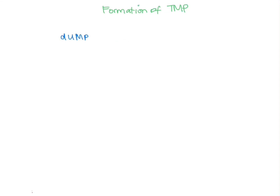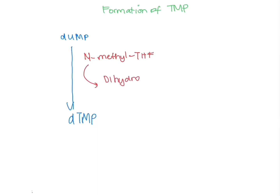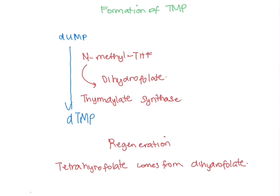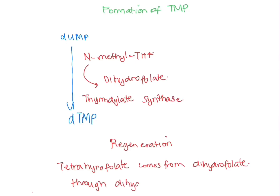Now let's look at the formation of TMP. We start off with dUMP, which becomes dTMP. This requires N-methyl tetrahydrofolate to donate a methyl group, forming dihydrofolate, and an enzyme called thymidylate synthase. Once dihydrofolate is formed, it can regenerate itself into tetrahydrofolate using an enzyme called dihydrofolate reductase.